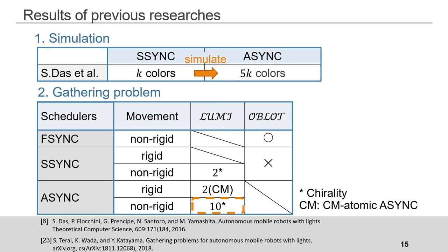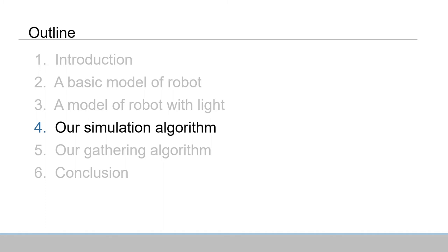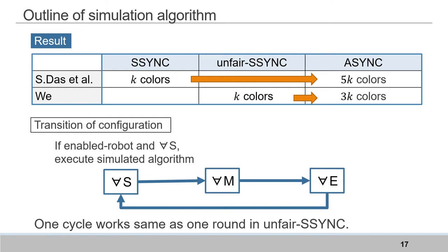Now let me present the results of our research, starting with the simulation algorithm. It simulates any unfair Ssync algorithm using k colors by Async robots with 3k colors. We reduced the number of colors, but it works under an unfair scheduler. The figure below shows the transition of the configuration. We named three colors of light for control: S, M, and E. When all robots have S, activated enabled robots execute the algorithm in an unfair Ssync and change their color to M. If there is a robot having M, robots change to M. Eventually all robots have M, and after that, in a similar way, all robots have E. This is a cycle of the algorithm, which works the same as one round in an unfair Ssync.